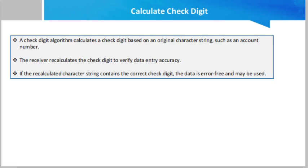Now, how to calculate the check digit? A check digit algorithm calculates a check digit based on an original character string, such as an account number. The receiver can recalculate the check digit to verify data entry accuracy. If the recalculated character string contains the correct check digit, the data is error-free and may be used. However, a character string that does not include the correct check digit indicates a transfer error, which signals that data must be re-entered and/or re-verified.